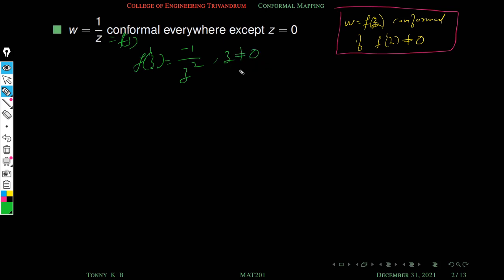It is also clear that f'(z) ≠ 0 when z ≠ 0, because -1/z² is never zero. So this function is analytic everywhere except z = 0, and the derivative is non-zero there. By this result, the function is conformal everywhere except z = 0.